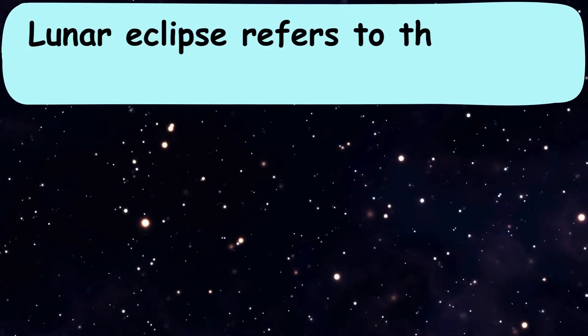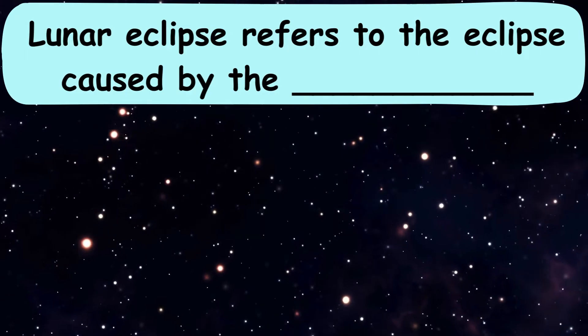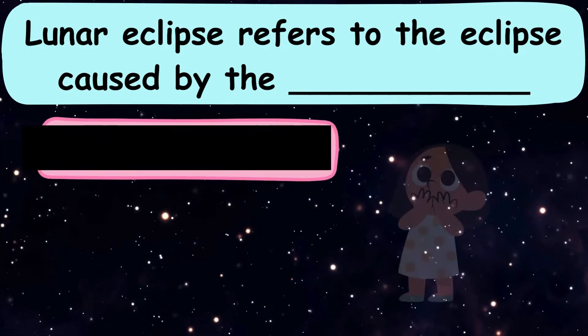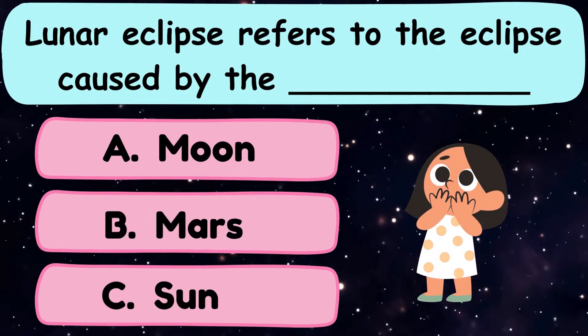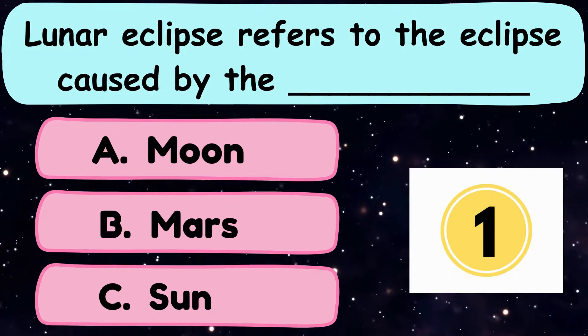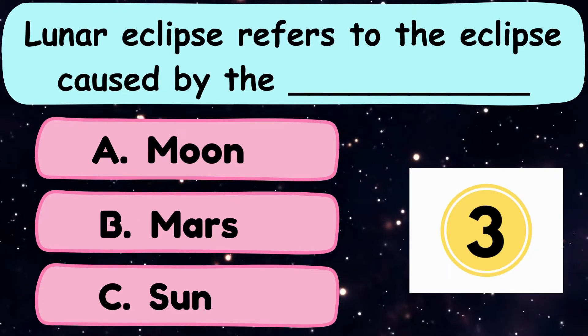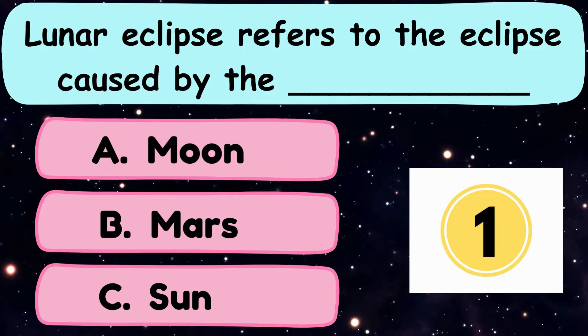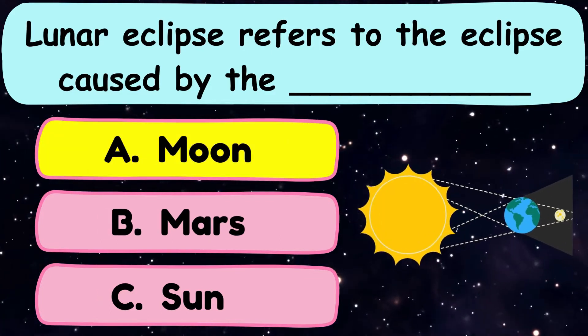Question number 2. Lunar eclipse refers to the eclipse caused by the dash. A. Moon, B. Mars, or C. Sun. And the answer is option A. Moon.